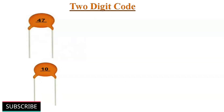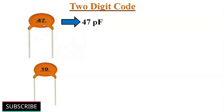Ceramic capacitors are generally smaller in size, so a two or three digit code is printed on them. Their capacitance value is in picofarads. For example, if a ceramic capacitor has 47 printed on it, then its capacitance value is 47 picofarads.